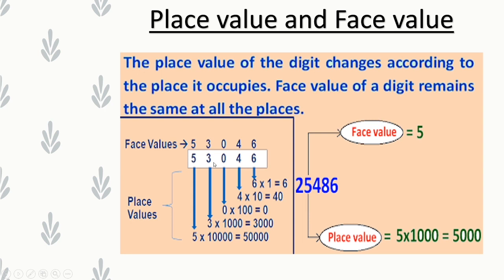Here we are given the number 53046. The place value of 6 is 6 × 1 = 6, because 6 is in the 1's place. Face value of 6 is 6. Place value of 4 is 4 × 10 = 40, because 4 is in the 10's place. Face value of 4 is 4 itself.